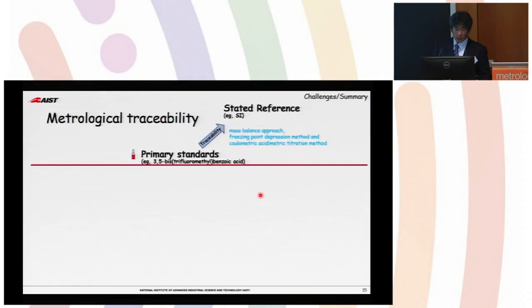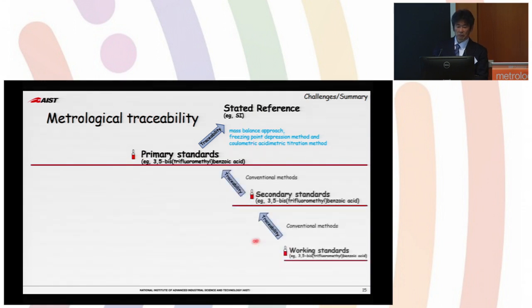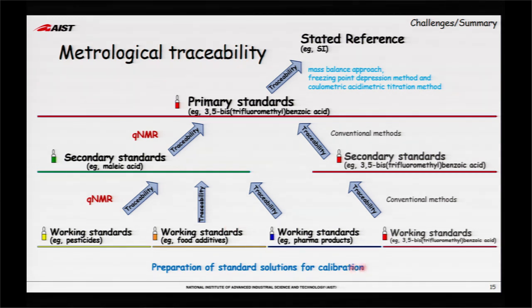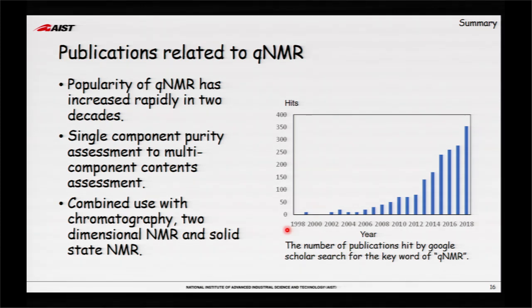So the metrological traceability, we need one good CRM which is traceable to reference through the SI, through the primary method. And conventional method, we have to have the same compound. But using proton NMR, QNMR, you have different kind of molecule and different kinds of substances. And now you can expand the kinds of selection of molecules, and you can prepare standard solution with these kinds of molecules, and the measurement below the system is getting more and more accurate and reliable.